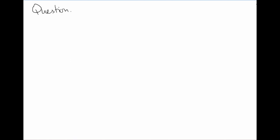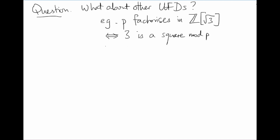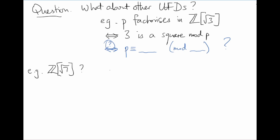Our next question was: can we do the same in other unique factorisation domains? Whether or not p factorises in Z adjoin root 3 comes down to asking whether or not 3 is a square mod p. So can we find a similar trick here that will give us a simple answer for all primes p simultaneously in terms of congruences? And what about other unique factorisation domains, like Z adjoin root 7 or Z adjoin root 11?